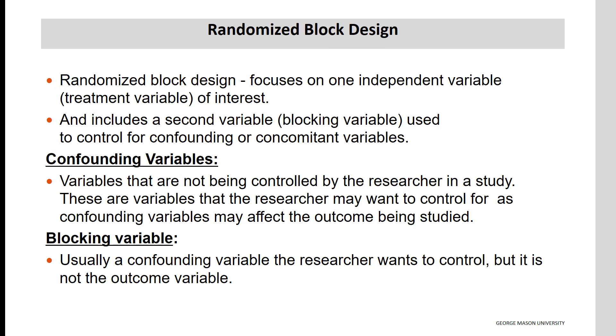A blocking variable is usually a confounding variable the researcher wants to control, but it is not the outcome variable. It is an independent variable of secondary importance.